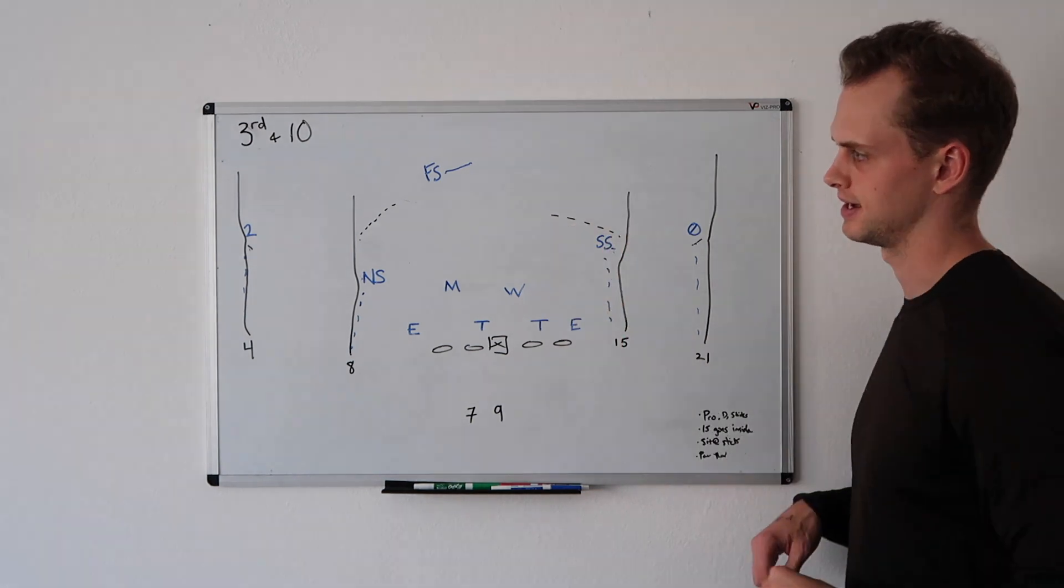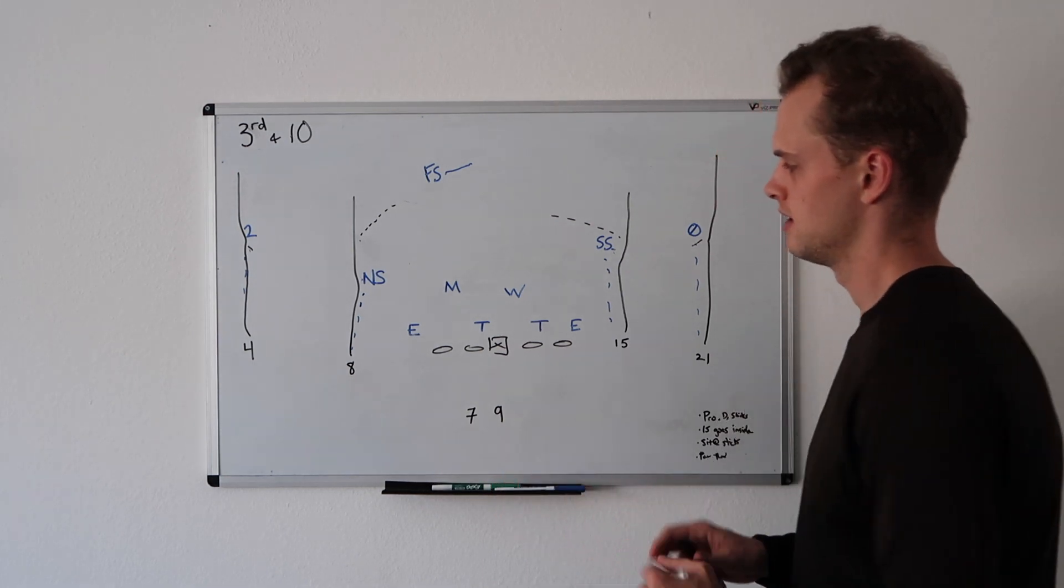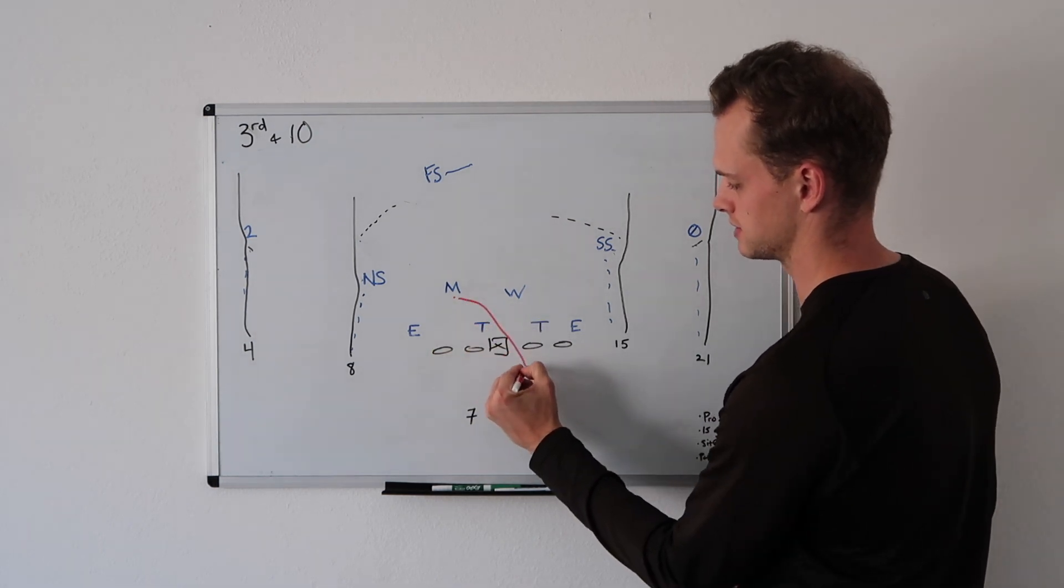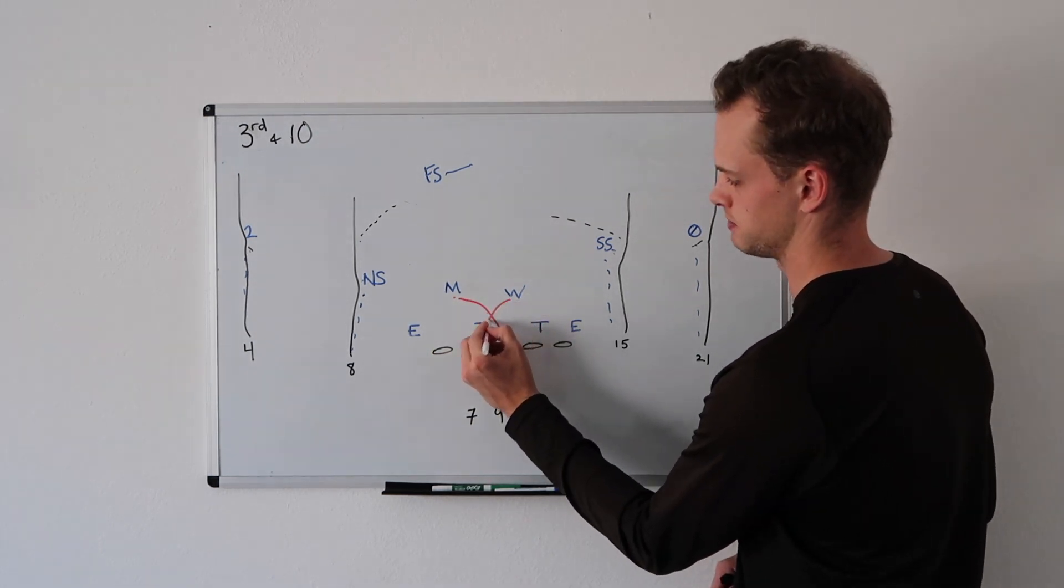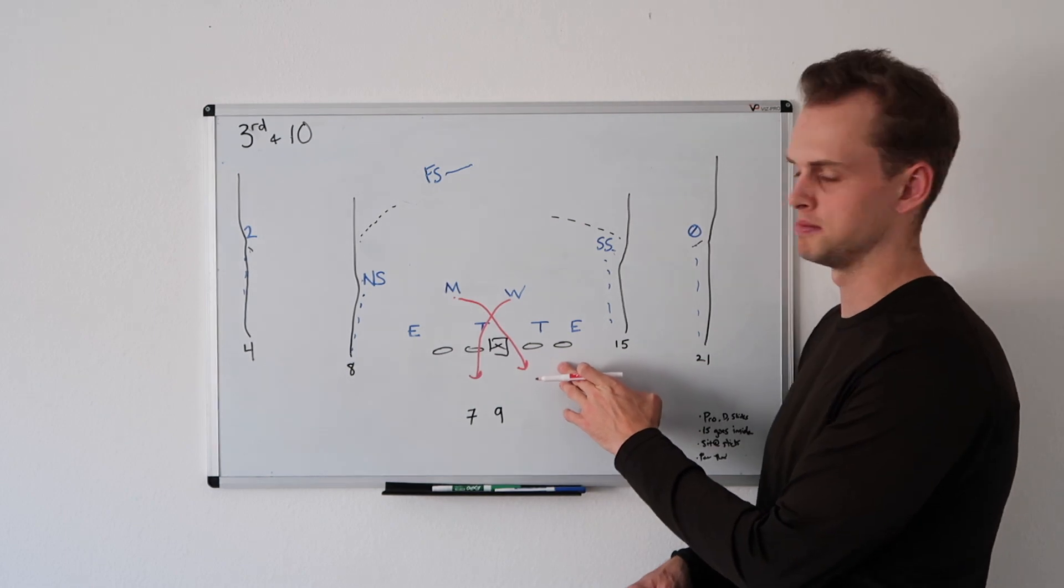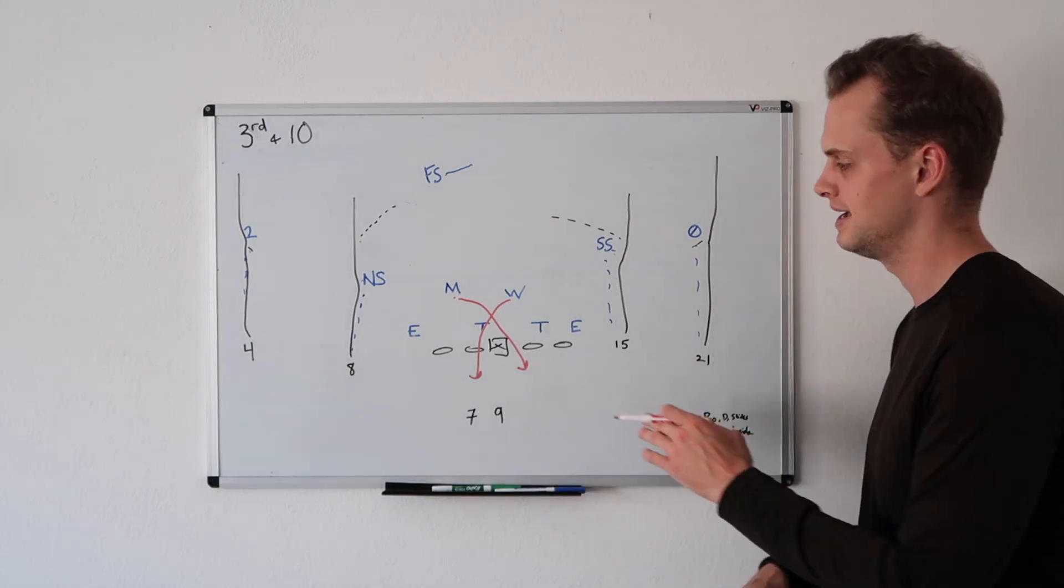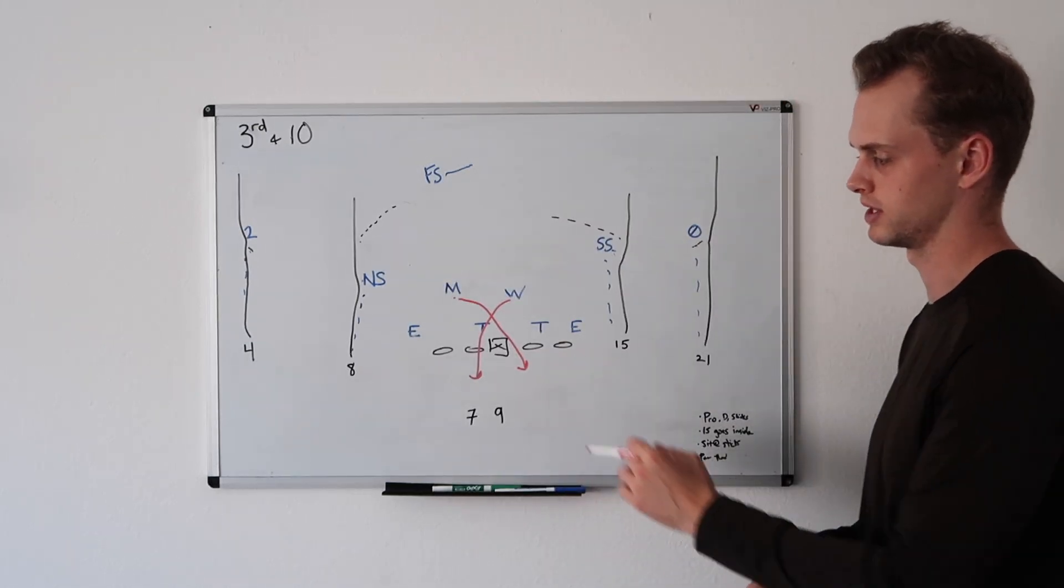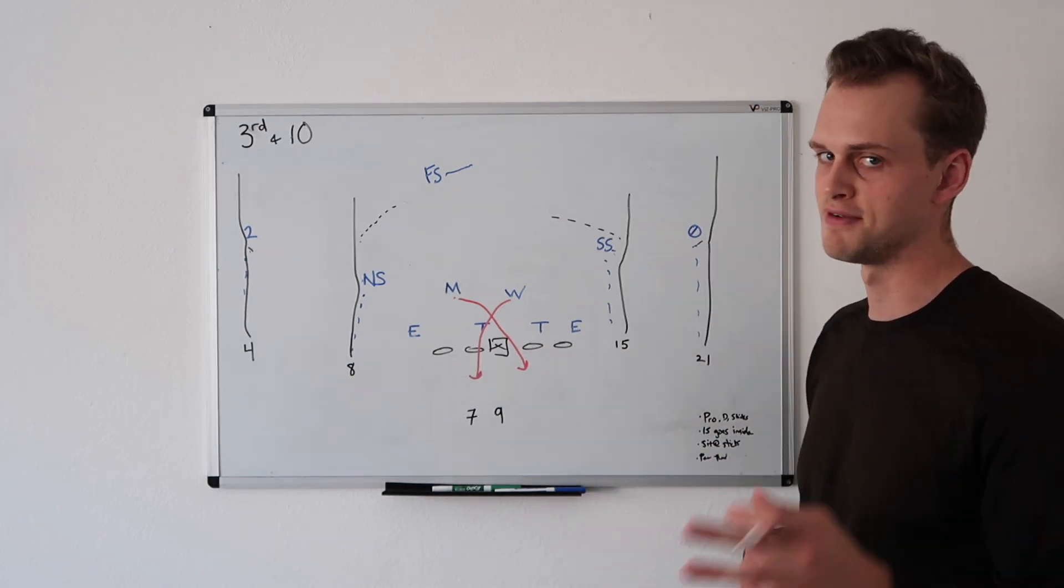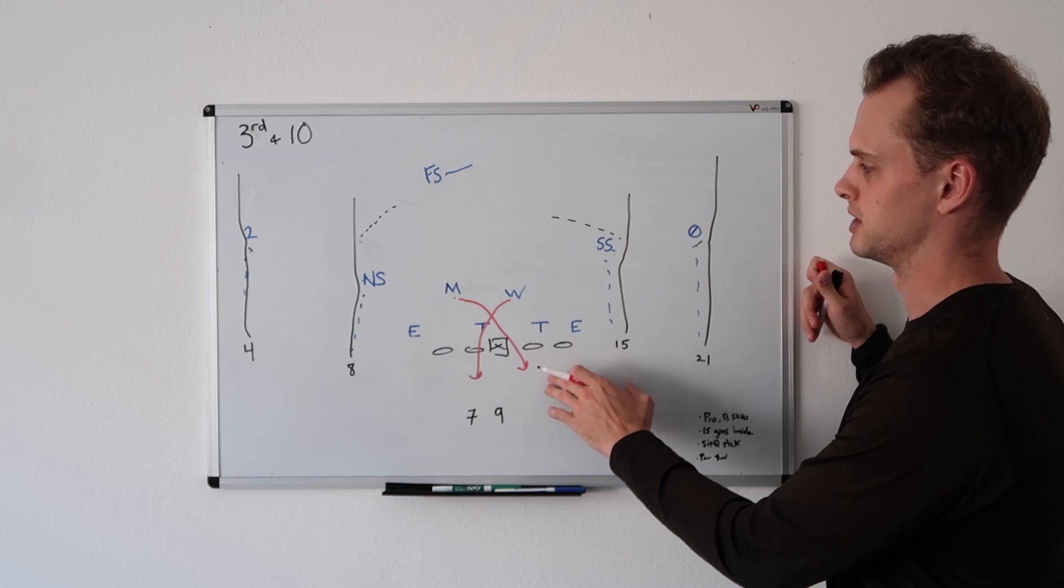I'll start with the Oregon side of things. Oregon's going to come out in man coverage, but they're going to bring a very popular blitzing scheme in the middle called a cross-dog blitz. They're going to bring the Mike linebacker coming from the left side, and he's going to cross over to the right, and they're going to bring the will right off his butt down to the left. As you can probably imagine, it can be hard for offensive lines to communicate with this. But this blitz especially is a very common blitz. I guarantee USC's offensive line is repped against this, especially even with a short week.